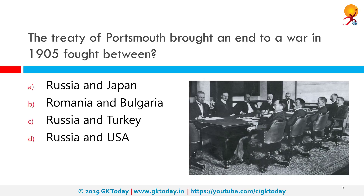The Treaty of Portsmouth brought an end to a war in 1905. Fought between who? The correct answer is Russia and Japan. The Treaty of Portsmouth formally ended the 1904–1905 Russo-Japanese War.